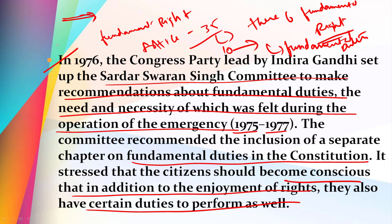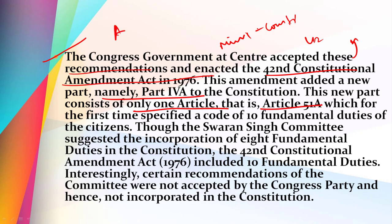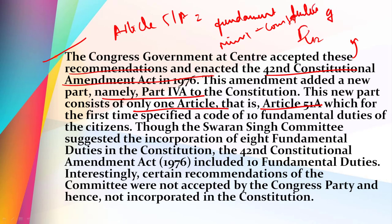The Swaran Singh committee advised the Indian government that every Indian citizen should follow fundamental duties and enjoy fundamental rights. The Congress government at the center accepted these recommendations and enacted the 42nd Constitutional Amendment Act in 1976, also called the mini constitution. This amendment added a new part, namely Part 4A, to the constitution, which consists of only one article — Article 51A — on fundamental duties of Indian citizens.